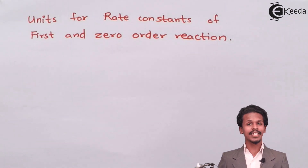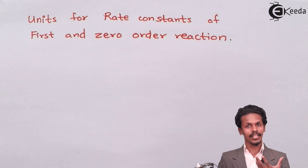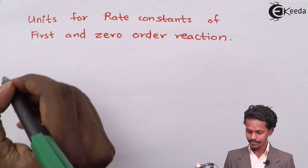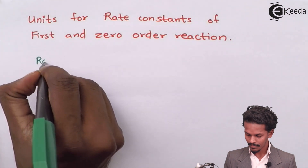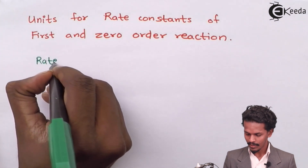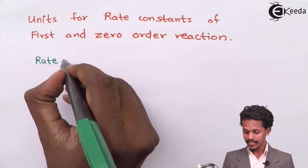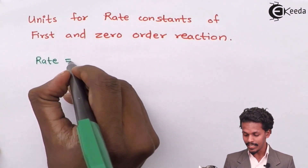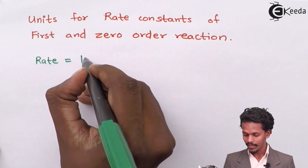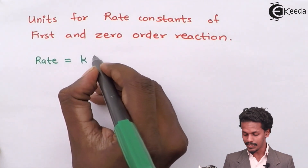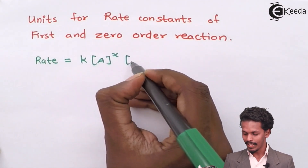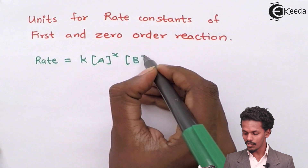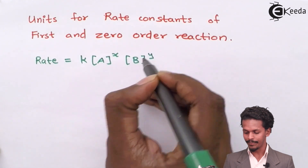As you know, rate constant can be elaborated in the form of the rate law, which is: rate is equal to k times concentration of A raised to x, times concentration of B raised to y.